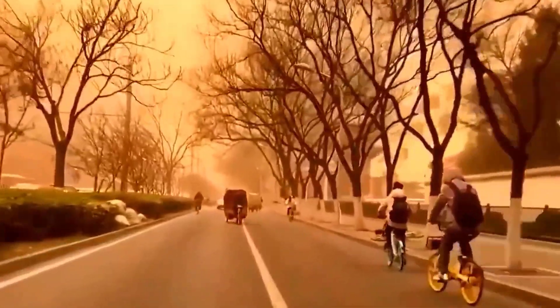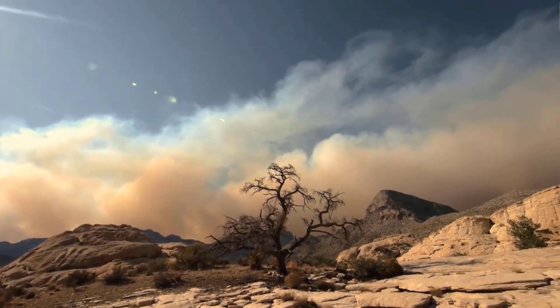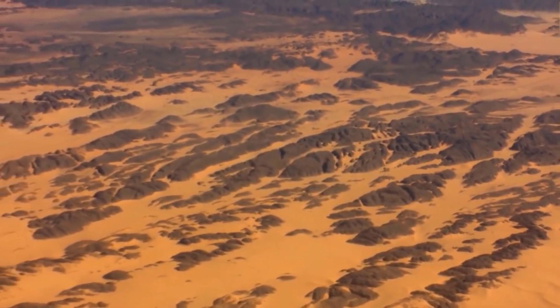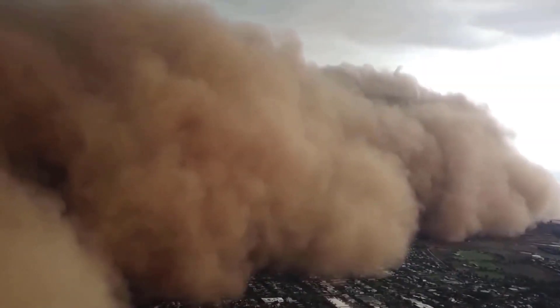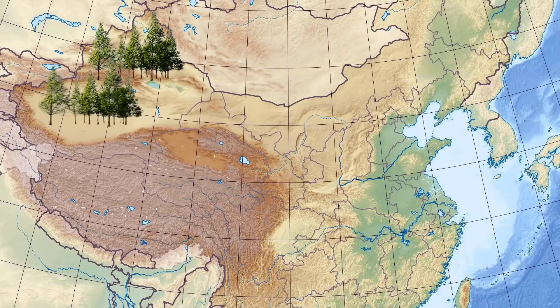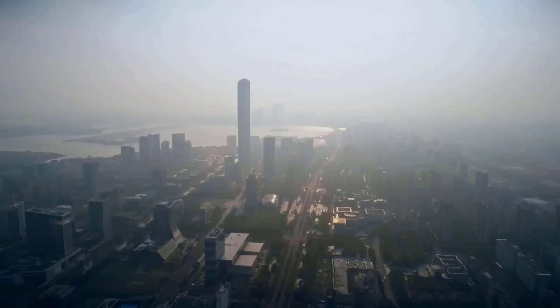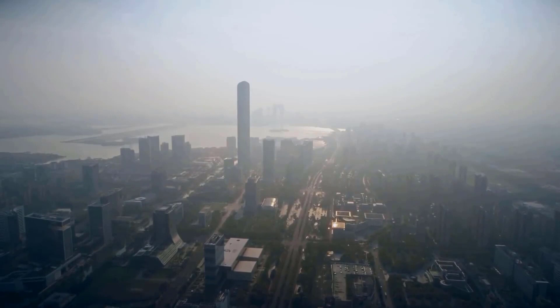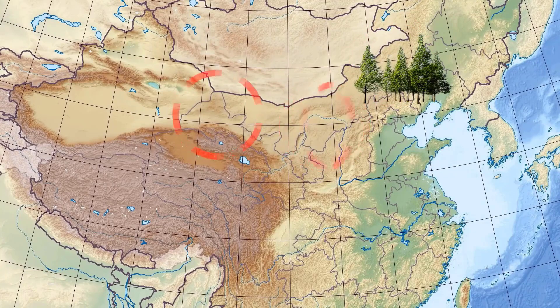The Three North Shelter Forest Program was a rather ambitious project when it was launched in 1978, also referred to as the Three North Shelter Belt Program or Great Green Wall. The goal of this program is to stop the spread of the Gobi Desert and initiate reforestation projects in the northeast, north, and northwest regions. The program has been ongoing since 1978 and has effectively curbed the expansion of desertification. It has also helped to prevent sandstorms and soil erosion, conserve water and soil, and safeguard agriculture in the region.